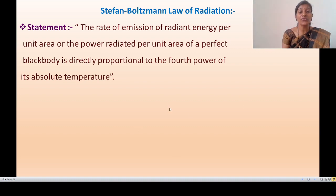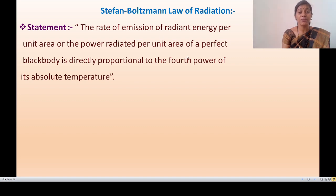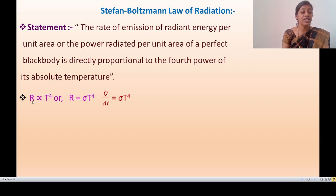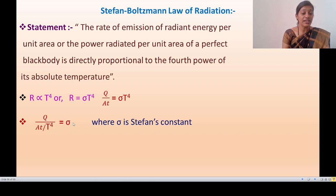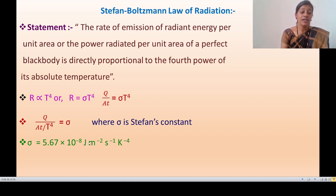Stefan-Boltzmann Law of Radiation: the rate of emission of radiant energy per unit area, or power radiated per unit area of a perfectly black body, is directly proportional to the fourth power of its absolute temperature. R is proportional to T⁴, or R equals sigma times T⁴. Here Q upon AT equals sigma times T⁴, where sigma is Stefan's constant with value 5.67 × 10⁻⁸ joule per meter squared per second per Kelvin⁴.